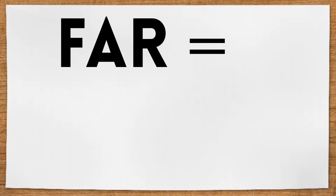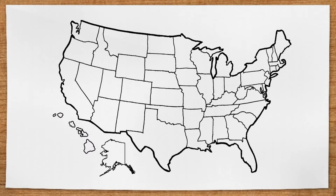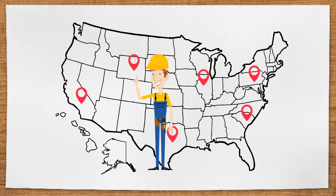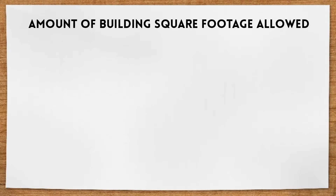FAR stands for Floor Area Ratio. The FAR can change based on the location of the site and the city that it's in. If you didn't know the FAR for a job, the building department for the town the site is located in could give you the information for that particular site. So the FAR tells us the amount of building square footage that's allowed to be built on the site based on the total area of the site.